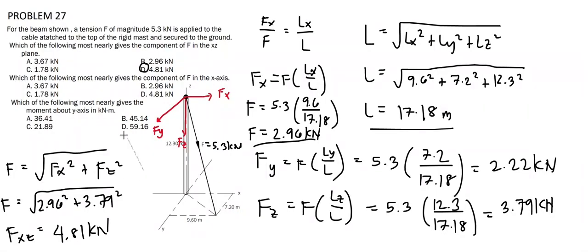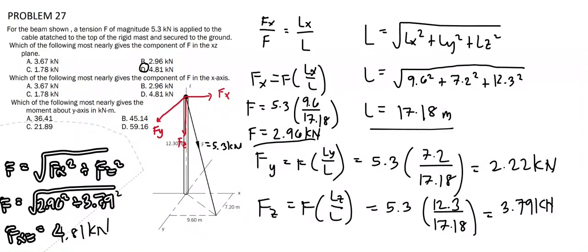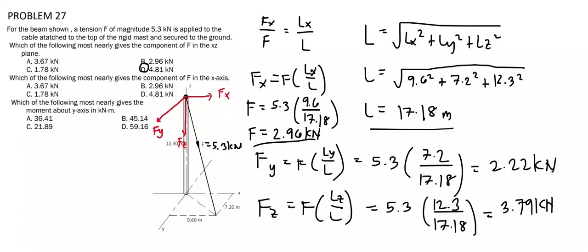And for the second problem, we are tasked to find the component of F in the x-axis, which we have already solved — that is a value of 2.96 kN, which is answer letter B.